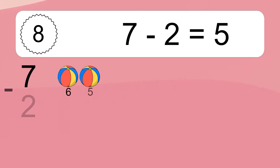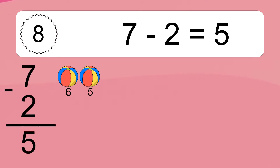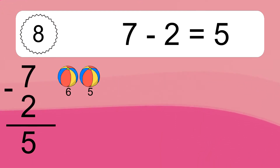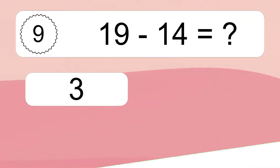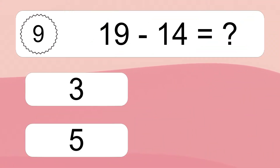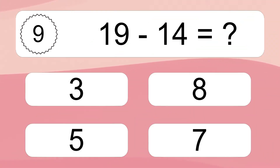7 minus 2 equals what? 7 minus 2 equals 5. Let's count it: 6, 5.